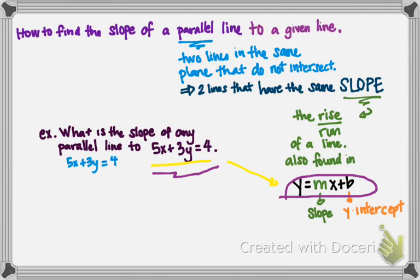So 5x plus 3y equals 4. Start off with that and your job is to isolate the y. So we'll subtract 5x from both sides giving us 3y equals negative 5x plus 4. And then to get rid of that 3 we divide by 3 on each side and that gives us y equals negative 5 thirds x plus 4 thirds.